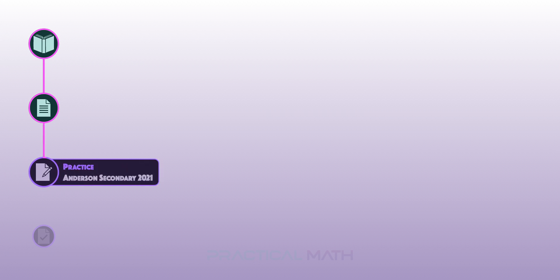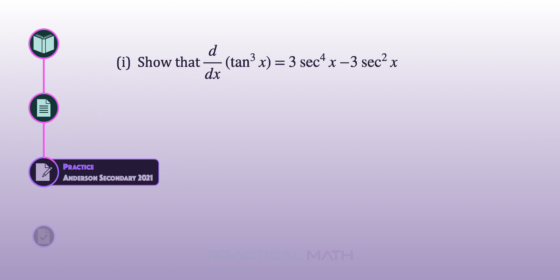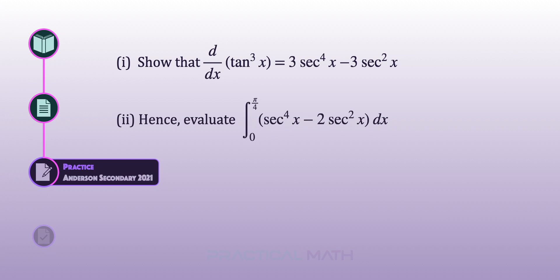Let's try another similar question. In part one, show that the derivative of tangent cubed of x is 3 times secant to the power of 4 of x minus 3 times secant squared of x. Next, evaluate the integral of secant to the power of 4 of x minus 2 times secant squared of x from 0 to pi over 4. This question is from Anderson Preliminary Examination 2021 for GC O-Level Additional Math. Pause to give it a try, and when you are ready, keep watching.